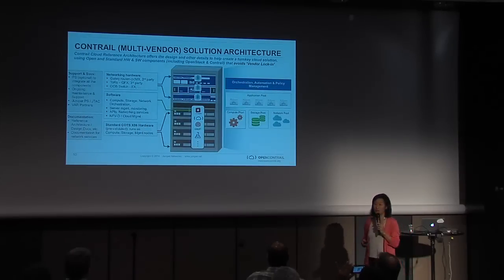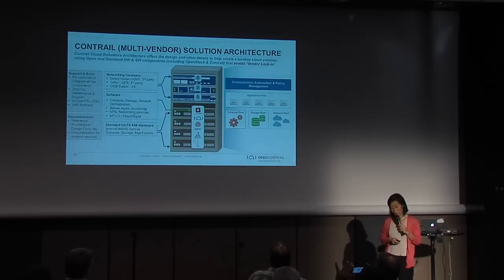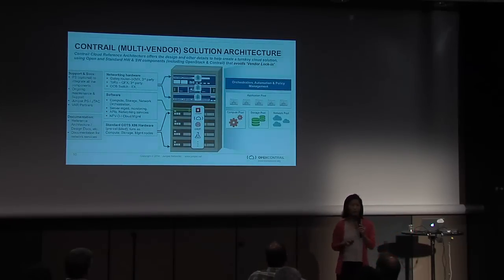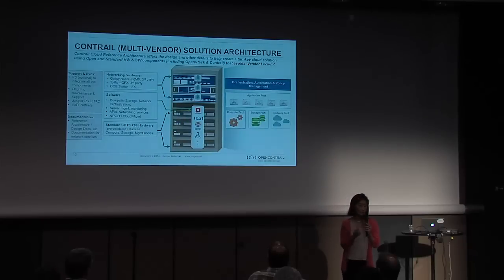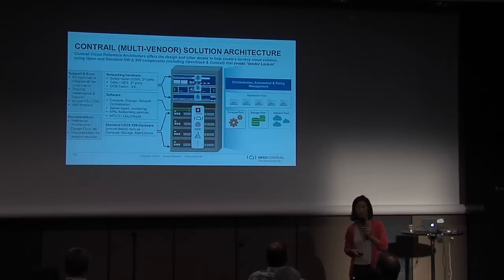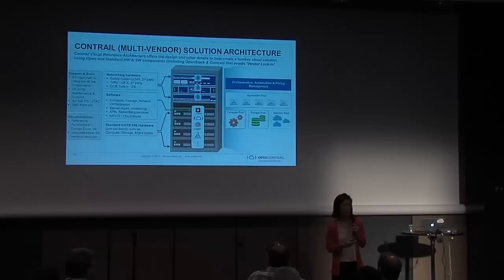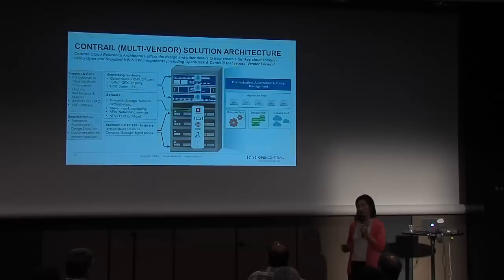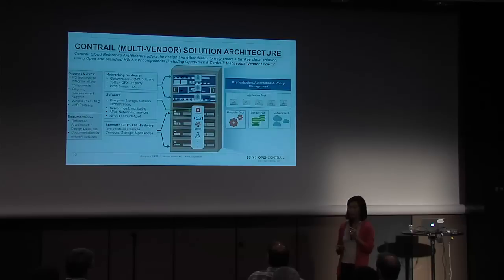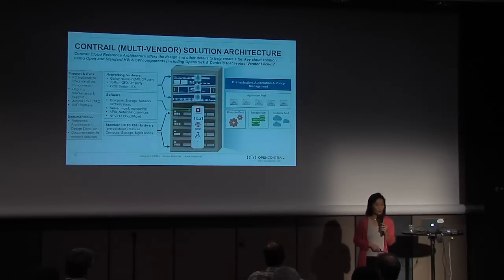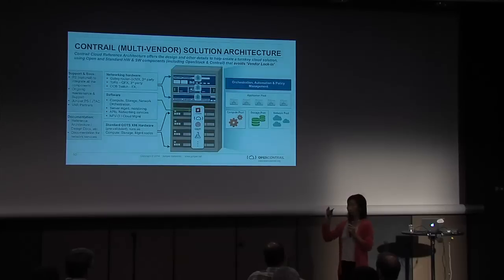The reference architecture approach involves not just the technology itself but the challenges in provisioning, troubleshooting, and correlation between the physical and virtual sides. Understanding whether an issue is an application problem, network problem, or storage problem is important. The network guys are losing visibility — they can't ping a VM, do a traceroute, do a packet capture, or understand aggregate throughput and flows for virtual machines within a virtual network. That's what we've really focused on with analytics, troubleshooting, and reference architectures.